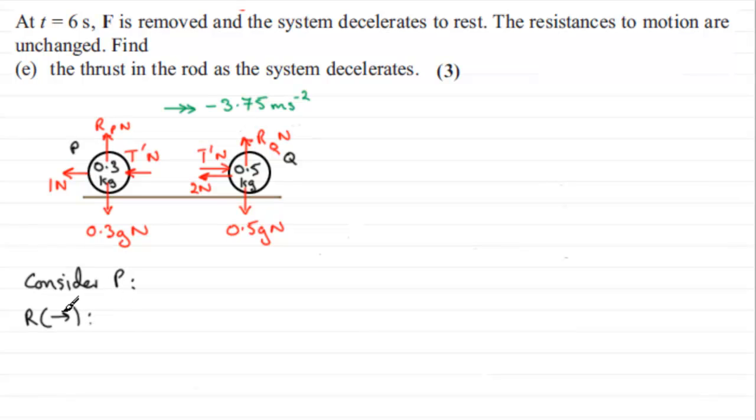So that means that all forces that are to the left, which is the 1 newton and the T dash Newtons, are going to be negative because they're in the opposite sense to this. So what we're going to have then is minus 1 minus T dash. As for these two forces, the reaction and the weight, they don't affect this answer here because they're perpendicular to the direction we're resolving in. Okay, so this is the overall force acting on P. And this is equal to the mass, which we know is 0.3 kilograms,